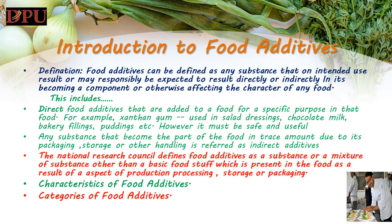This includes direct food additives that are added to a food for a specific purpose in the food. For example, xanthan gum used in salad dressings, chocolate milk, bakery fillings, puddings etc. However it must be safe and useful. Any substance that becomes part of the food in trace amounts due to its packaging, storage or other handling is referred to as an indirect additive. The National Research Council defines food additives as a substance or mixture of substances other than a basic foodstuff, which is present in the food as a result of an aspect of production, processing, storage or packaging.